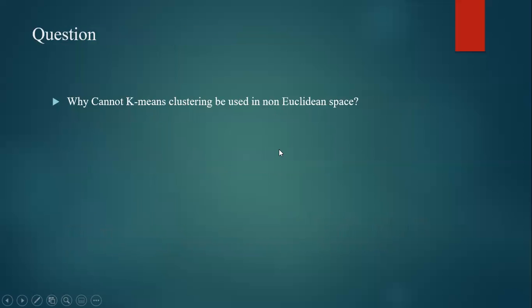I have a question here: why cannot k-means clustering be used in non-Euclidean space? Euclidean space uses the multivariate mean and is all about Euclidean distances. Non-Euclidean distances will generally not span Euclidean space, and that is the reason why k-means clustering can only be used with Euclidean distances. Thank you.